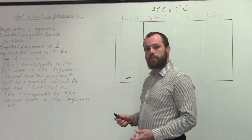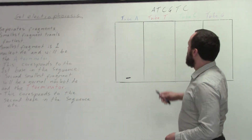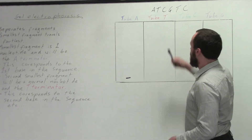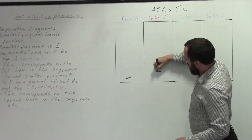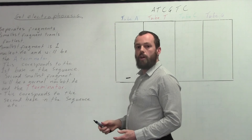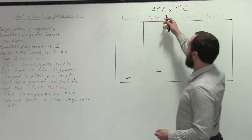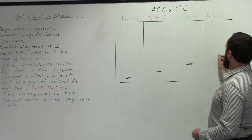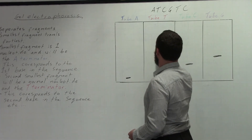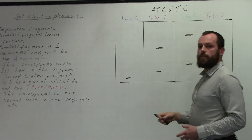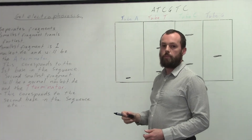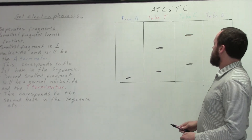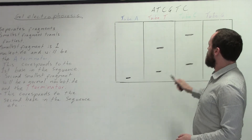This will correspond with the first base in the sequence of DNA that we're trying to sequence. Similarly, the test tube with the T terminator nucleotide in it will contain the fragment which is the second longest — a normal A nucleotide followed by a T terminator nucleotide — and this will correspond to the second base. This process will just continue: the C tube gives a fragment three nucleotides long, followed by G, then another T, and another C. Each of these fragments has been radioactively labelled with the primer, so I'll be able to identify them. From this I can read the sequence: first nucleotide A, second T, third C, fourth G, another T, and another C on the end.